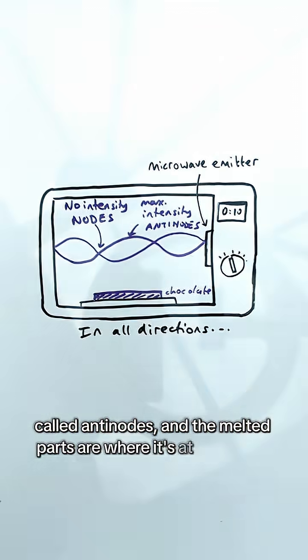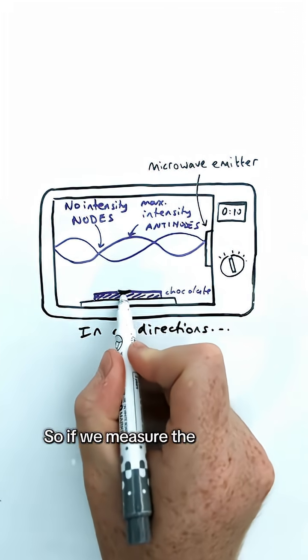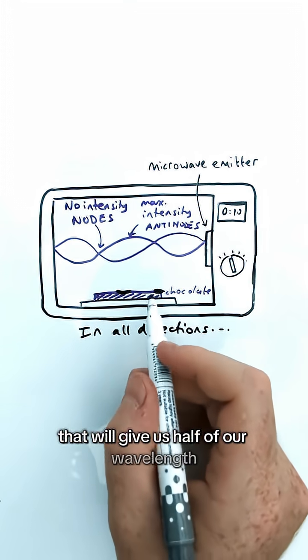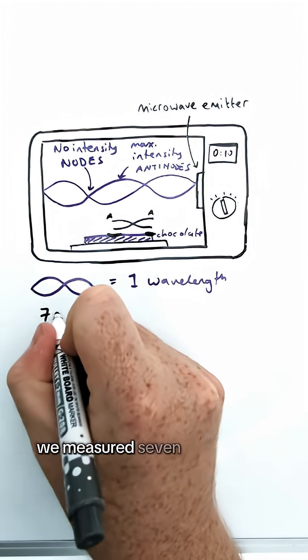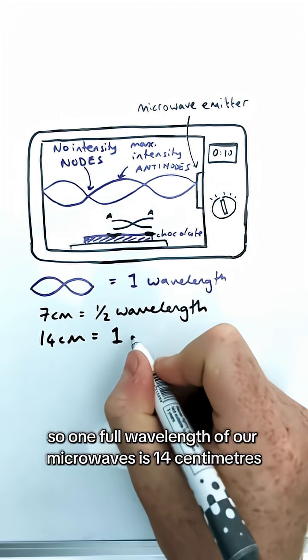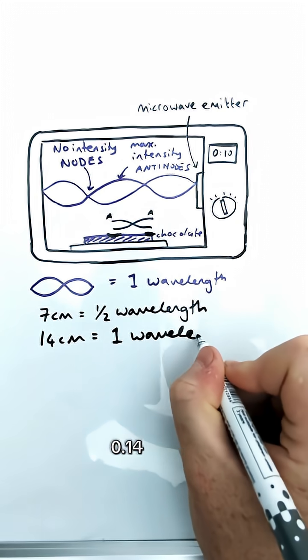And the melted parts are where it's at maximum intensity. So if we measure the distance between two antinodes, that will give us half of our wavelength. Now, in this case, we measured seven centimeters. So one full wavelength of our microwaves is 14 centimeters or 0.14 meters.